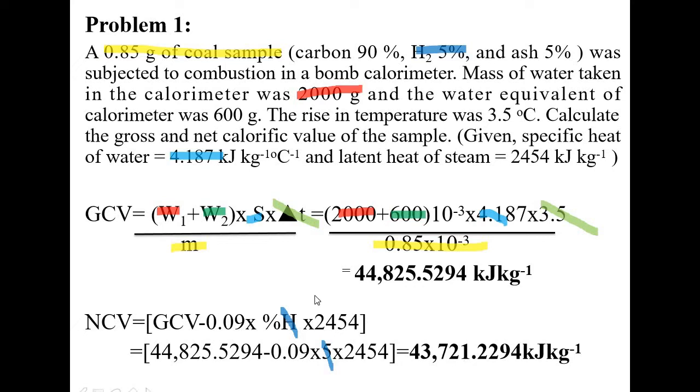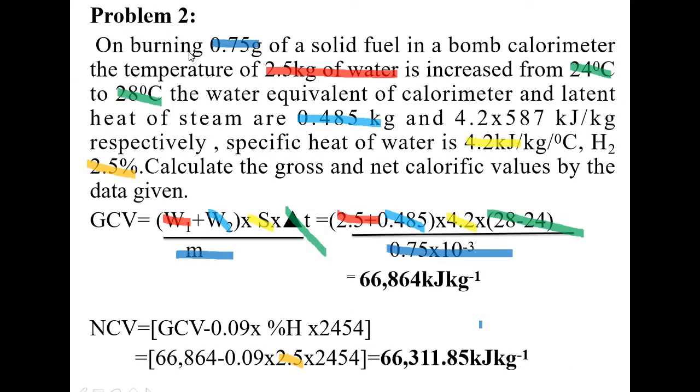Similarly moving on to problem number 2. In this 0.75 gram of fuel is taken, given in gram so express in kg, multiply by 10 to the power minus 3. 2.5 kg of water is taken in the calorimeter, therefore W1 is 2.5 kg. Water equivalent of the calorimeter is given to be 0.485 kg therefore W2 is 0.485. Temperature of water increased from 24 to 28 degree Celsius, therefore delta T is 28 minus 24, take the difference. Specific heat of water given to be 4.2, so in place of S write 4.2. After substituting all the values you will get the value in kilojoules per kg, that is GCV.